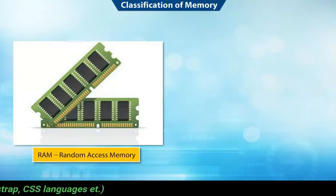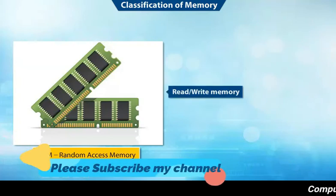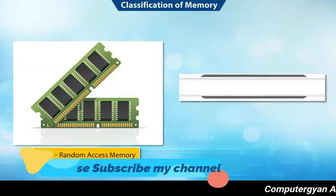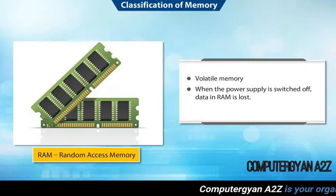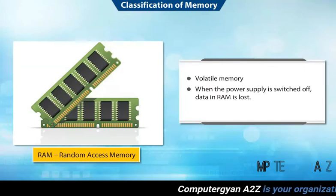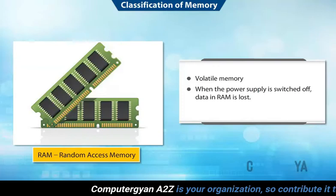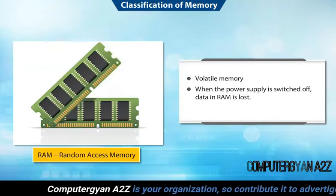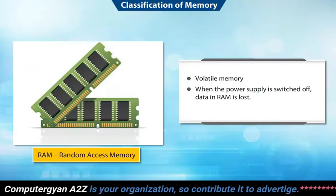RAM stands for Random Access Memory. It is also known as Read or Write Memory. This is a volatile memory, which means if the power supplied to the computer is switched off, the data stored in RAM will be lost. The data is stored in RAM temporarily.